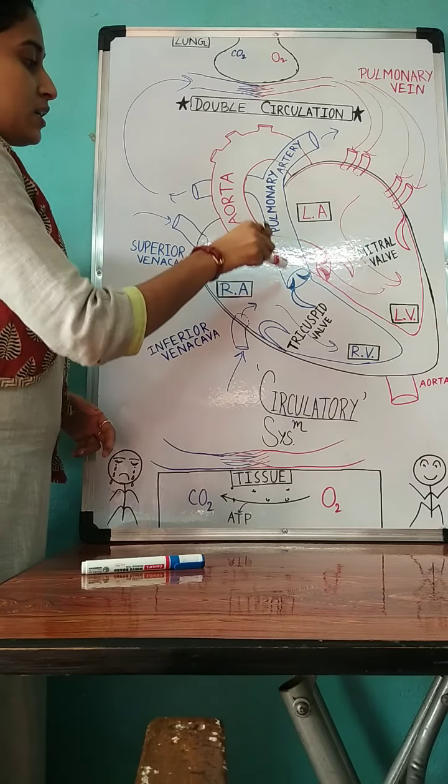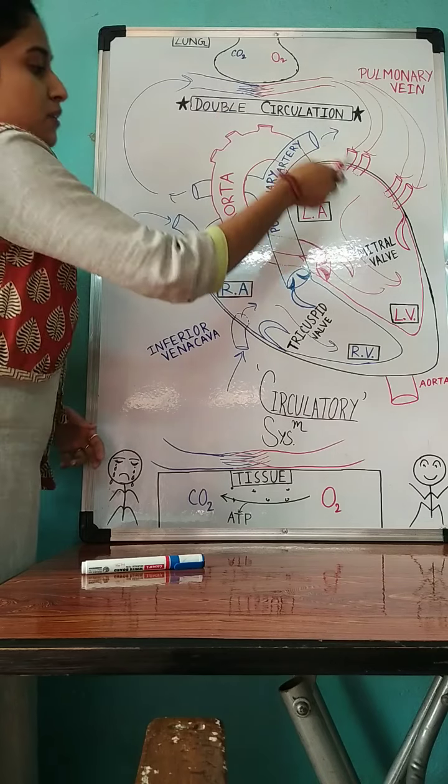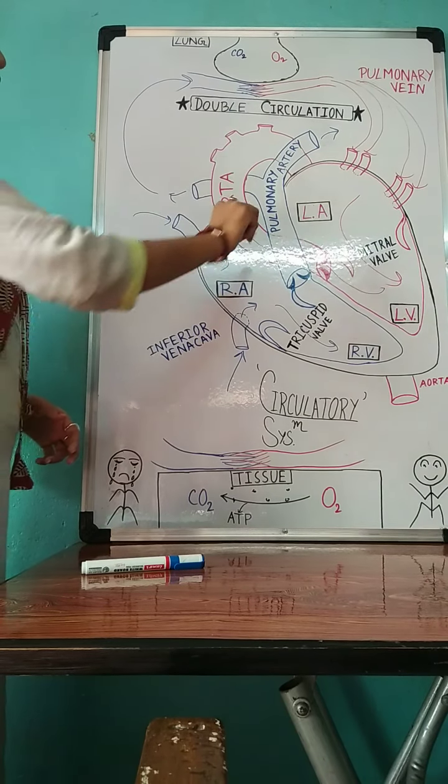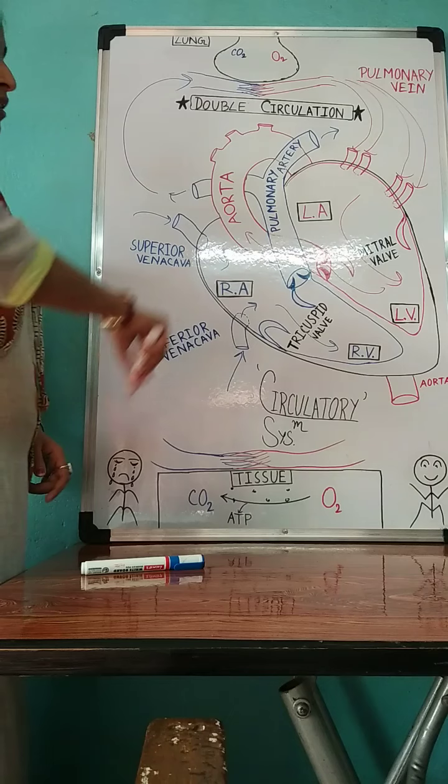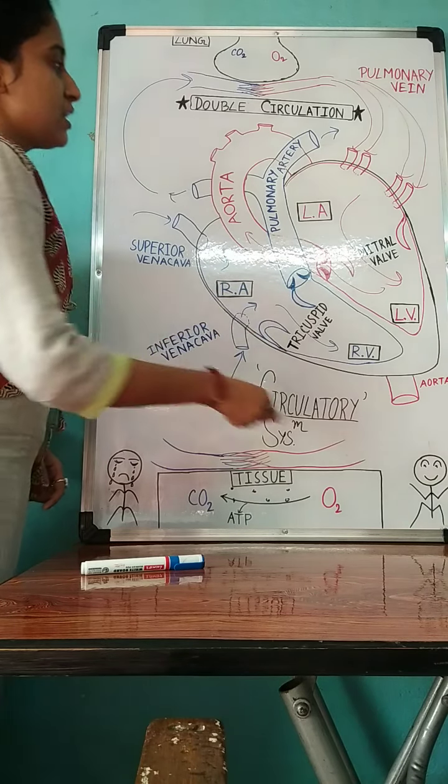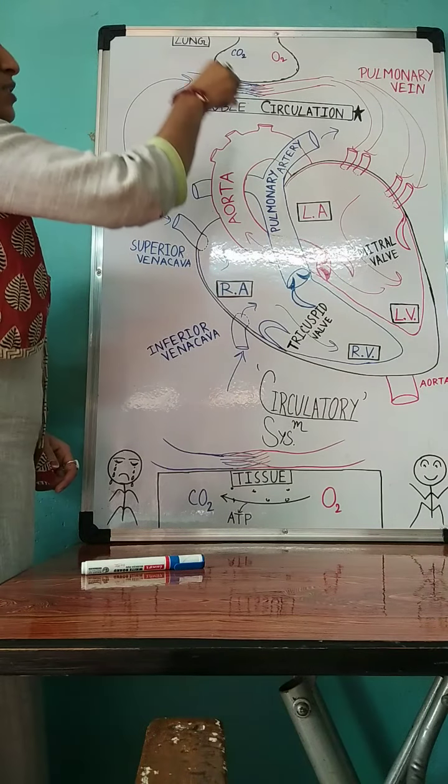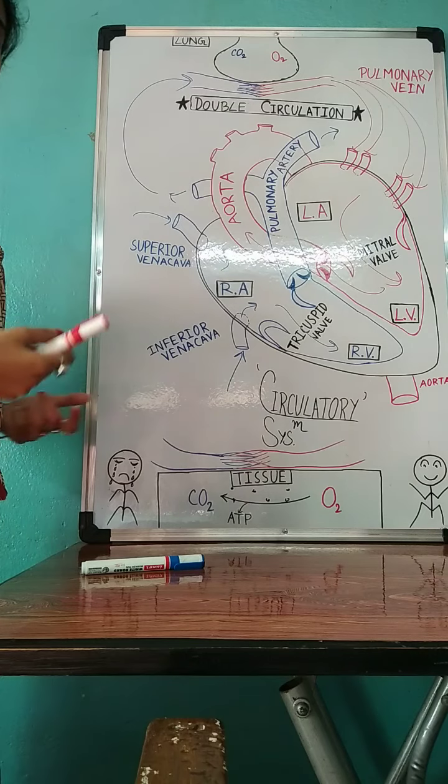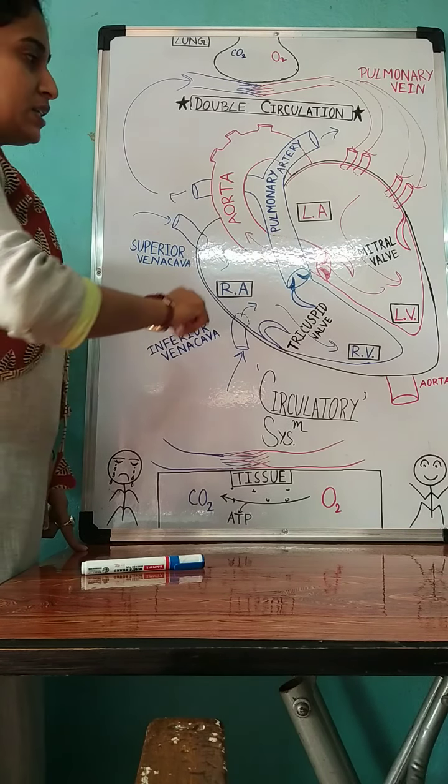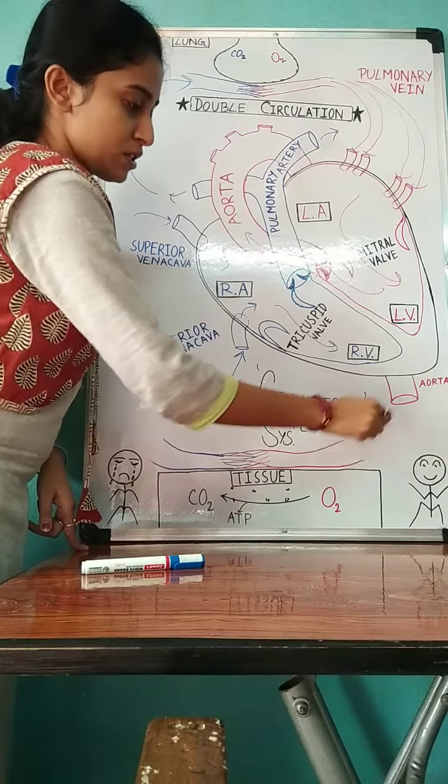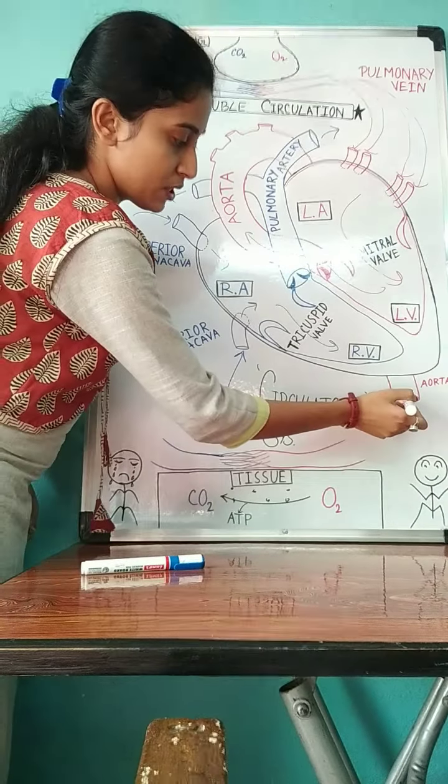Now aorta takes a bend behind the heart and over the pulmonary artery. During bending, it gives some branches to the upper portion of our body and goes downward to supply the lower portion of our body.